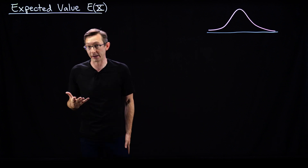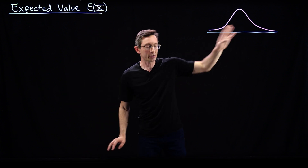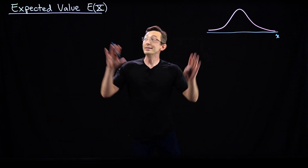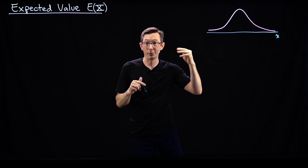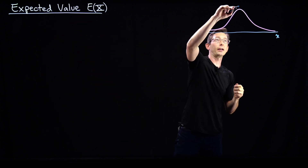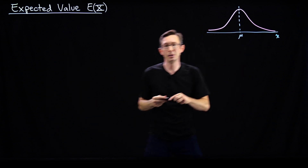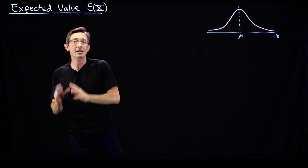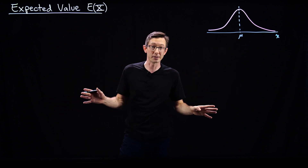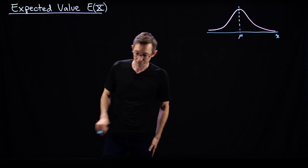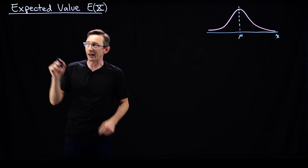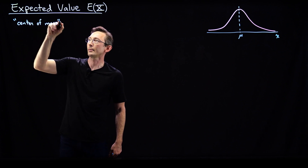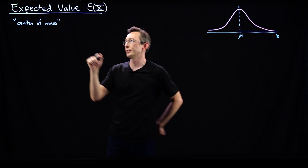That's essentially what expected value is. For a given distribution — this is my regular Gaussian distribution over some variable x — the expected value is actually going to coincide with the most likely value, the mean of the distribution mu. But that's not true for every probability distribution. Sometimes you get counterintuitive or even misleading results. Approximately speaking, the expected value is the center of mass of your probability distribution.